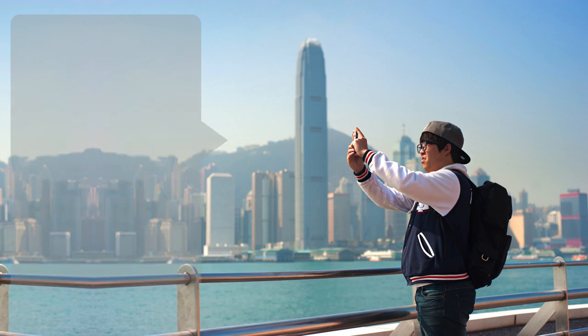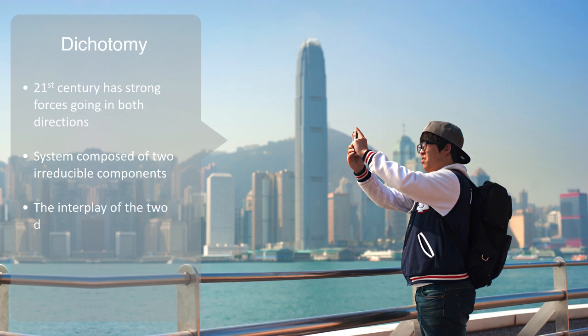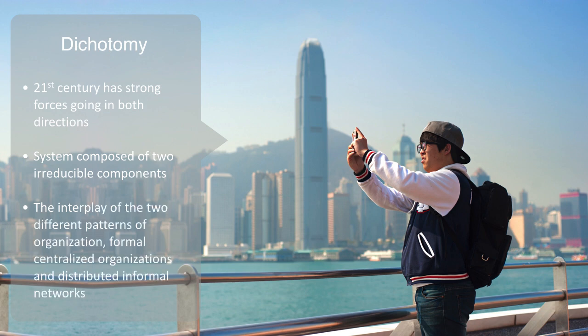But unlike the 19th and 20th century that were largely a one-directional process towards centralization, the 21st century has strong forces going in both directions, as on many levels information technology is having a radical redistribution effect, while on other levels traditional industrial processes of convergence and centralization continue at an unprecedented scale, not set to slow down for many decades. This is a key characteristic of complexity — a system composed of two irreducible components. 21st century technology and systems of organization are, at least partly, characterized by this interplay of the two different patterns of organization: formal centralized organizations and distributed informal networks. Developing methods and design patterns to integrate the two is a key consideration going forward.